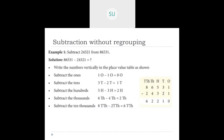For subtraction without regrouping, take the numbers and arrange them in the place value chart, just as in addition, but always write the bigger number first. For example: subtract 24,321 from 86,531. So write 86,531 first, then 24,321 below it. In subtraction, just like addition, you start subtracting from the ones place.